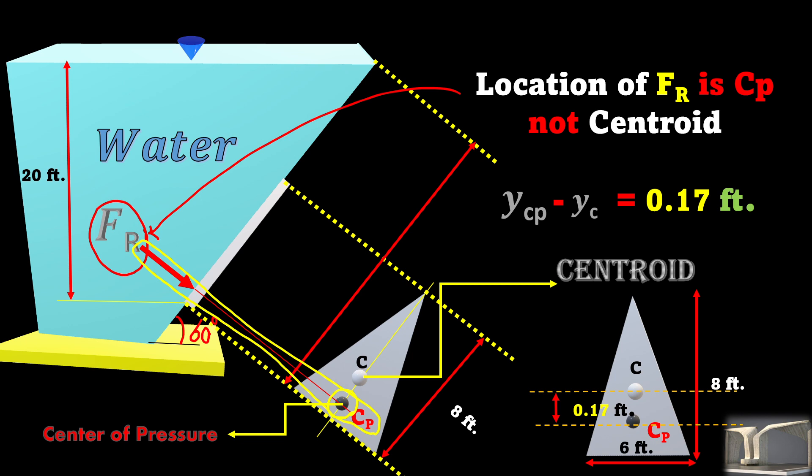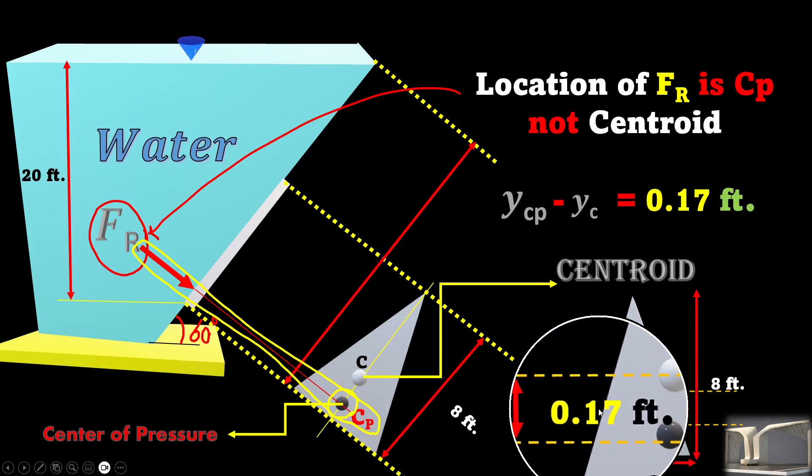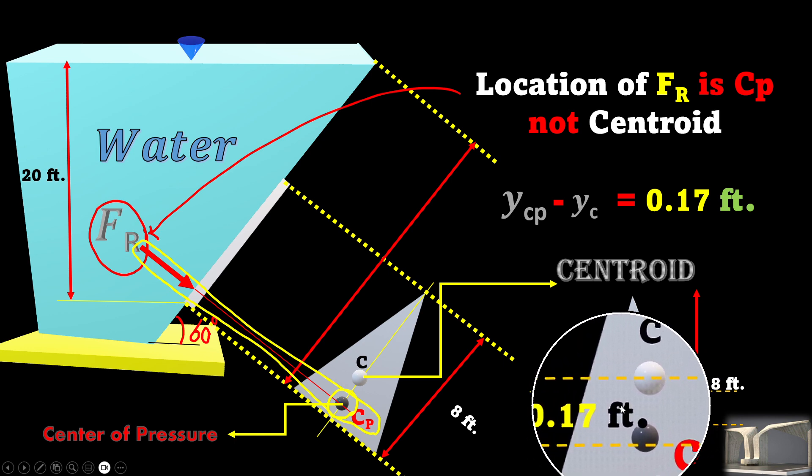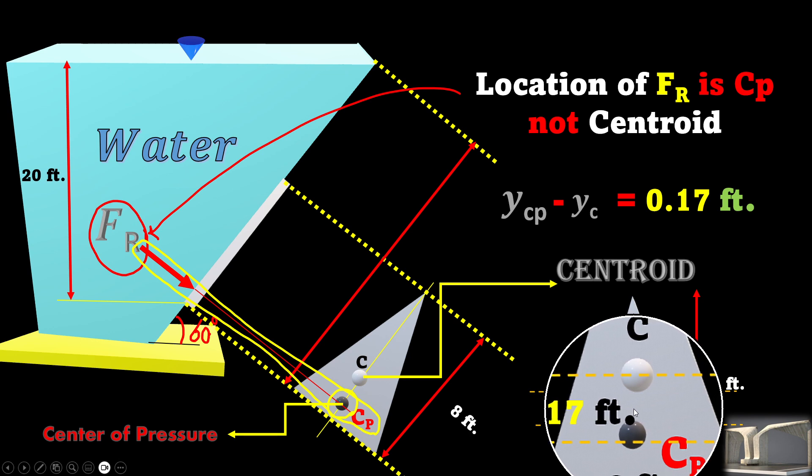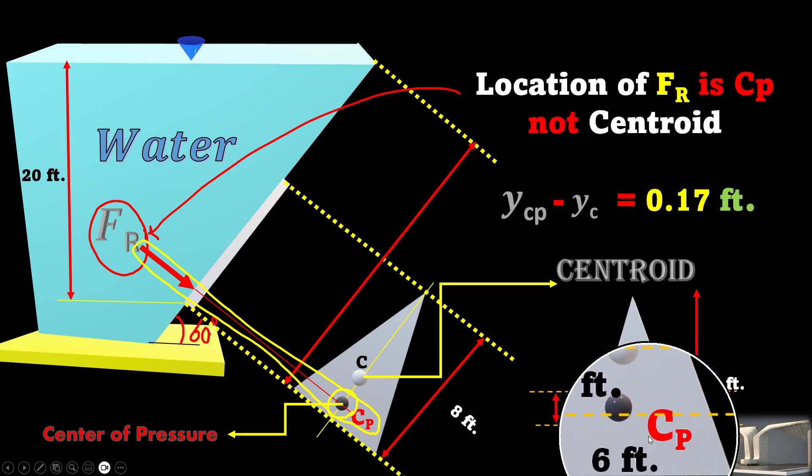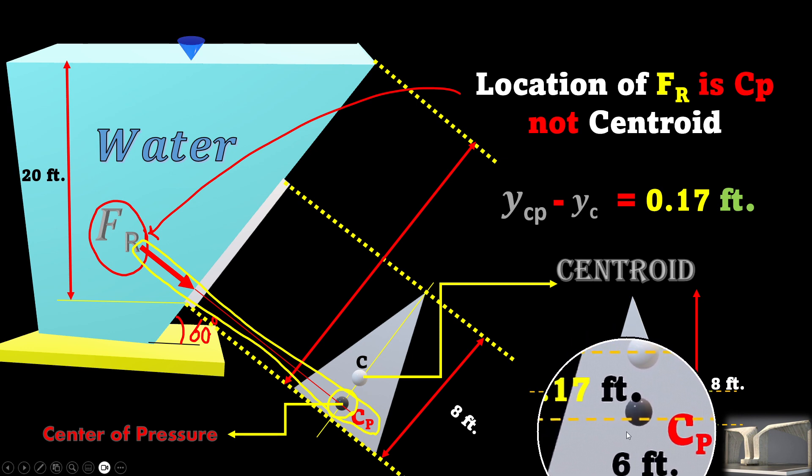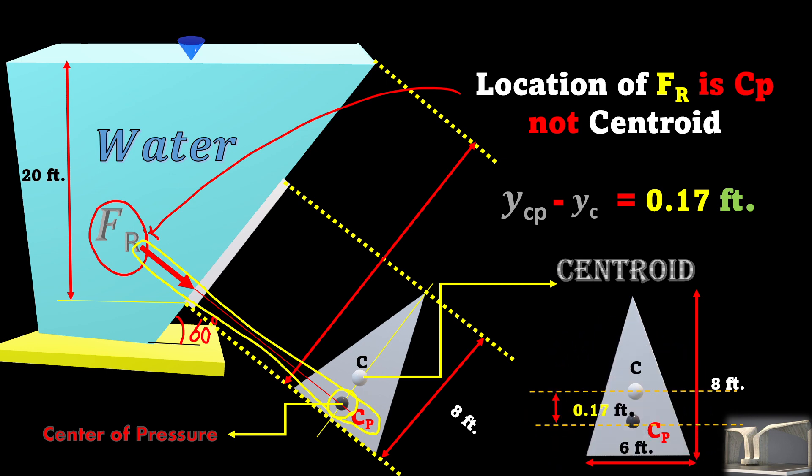the distance between a centroid and center of pressure gets smaller and smaller in such a case that at a very deep ocean, almost centroid and center of pressure, they collapse on each other, almost. Thank you.